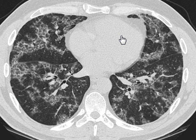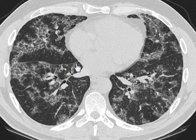Some other conditions can also produce this pattern, and those have been discussed previously with videos available on the website. Another important point for those interested in image interpretation: you can see two lines, one in each lung — these are the oblique fissures.